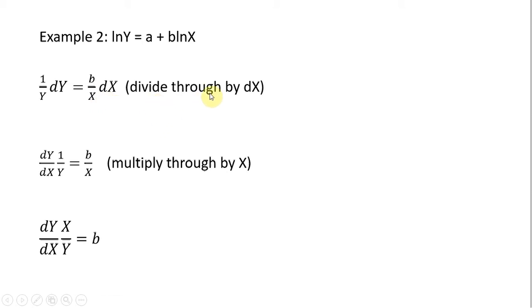Let's divide everything through now by dx. So doing that, our left-hand side now looks like this. And now we want to multiply everything through by x. And if we do that, you'll notice the left-hand side is our typical elasticity expression. And given this functional form, the elasticity will just equal b.